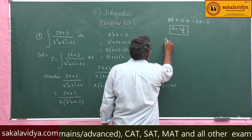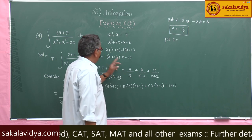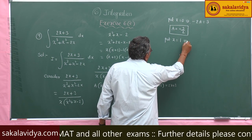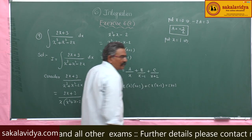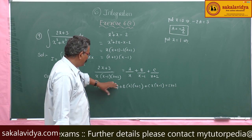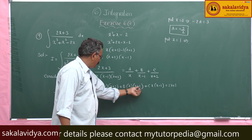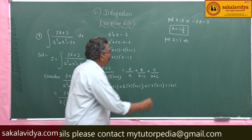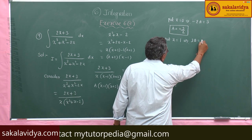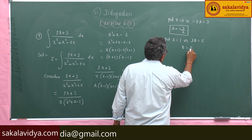Now put x = 1. The A and C terms become zero. We get B·(1)·(1 + 2) = 2(1) + 3, so 3B = 5. Therefore B = 5/3.